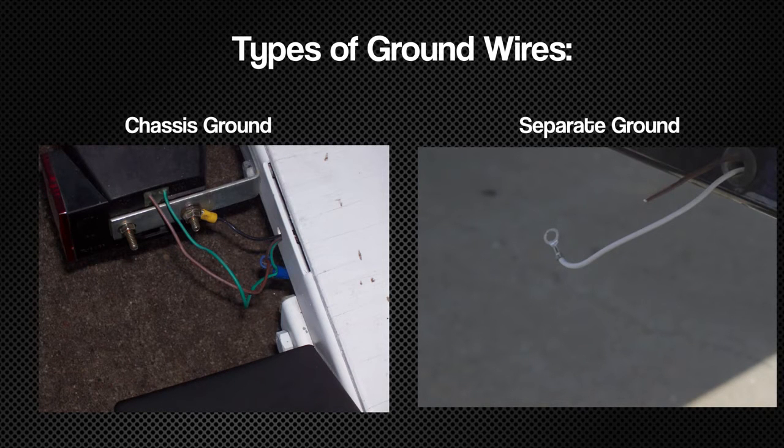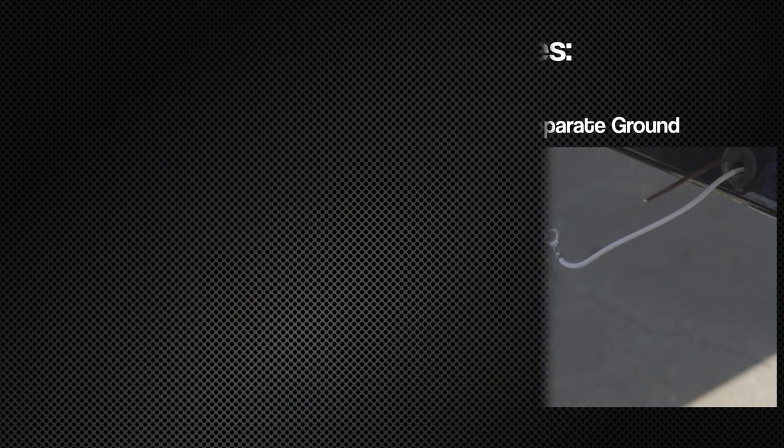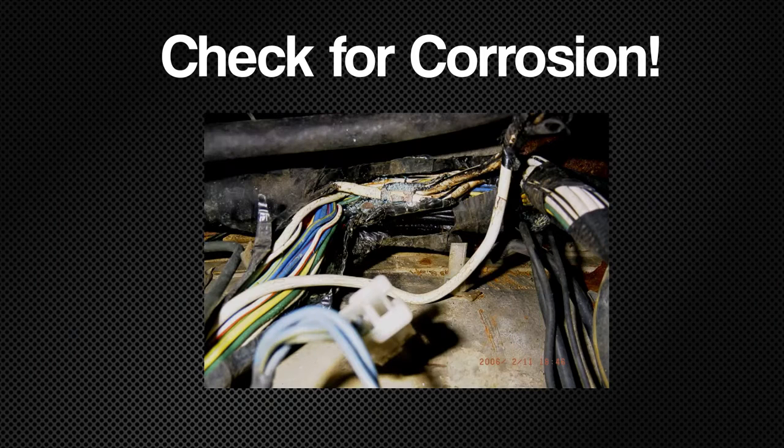There are advantages and disadvantages of both styles that are beyond the scope of this video, but improper grounding is one of the most common causes of lighting problems. If you see corrosion or loose connections where wire is attached to the trailer chassis, you may need to repair these connections or fit a harness with a dedicated ground.